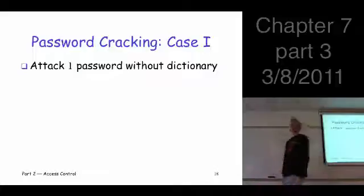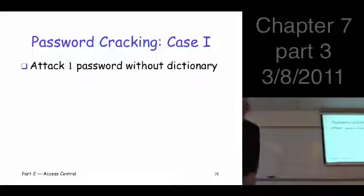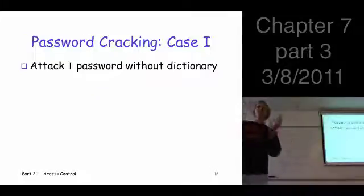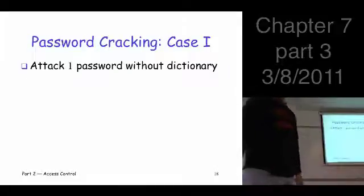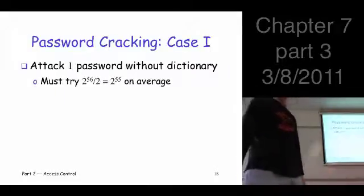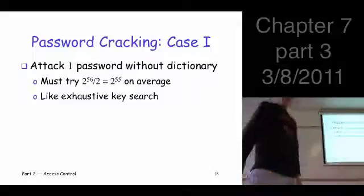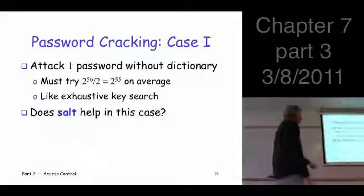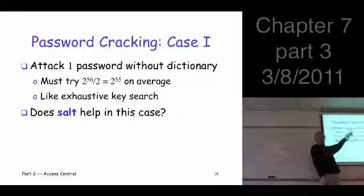How much work is this? You don't have anything to go on. It's just like a brute force, exhaustive key search. Without a dictionary, you just try them all. There's 2 to the 56. You try half of those, you expect to find it. It's 2 to the 55.